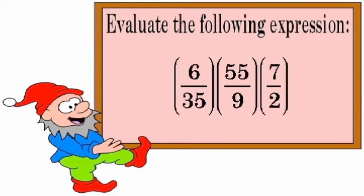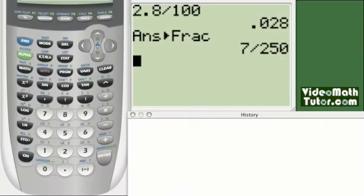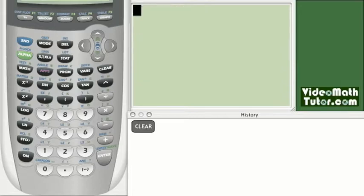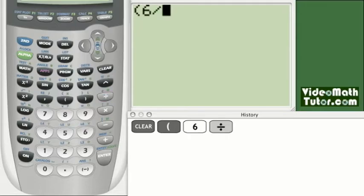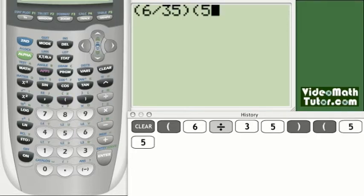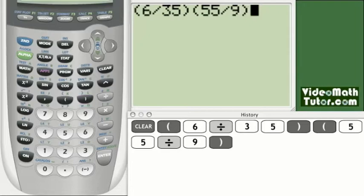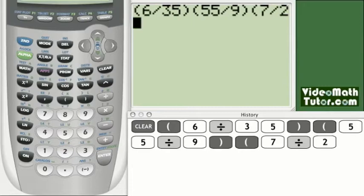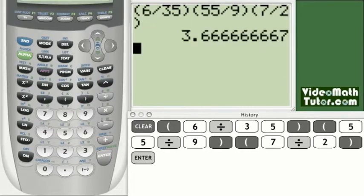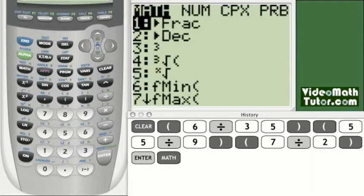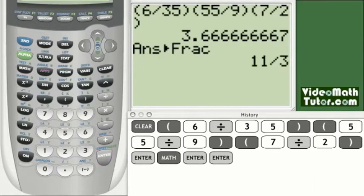Evaluate the following expression: six thirty-fifths times fifty-five ninths times seven halves. Our first step is to clear. Now let's input our three fractions. Parentheses. Six divided by thirty-five. Close parentheses. Open parentheses again. Seven divided by two. And close parentheses. Let's press enter. And now let's make this a fraction. Math. Enter. Enter again. So our answer is eleven thirds.